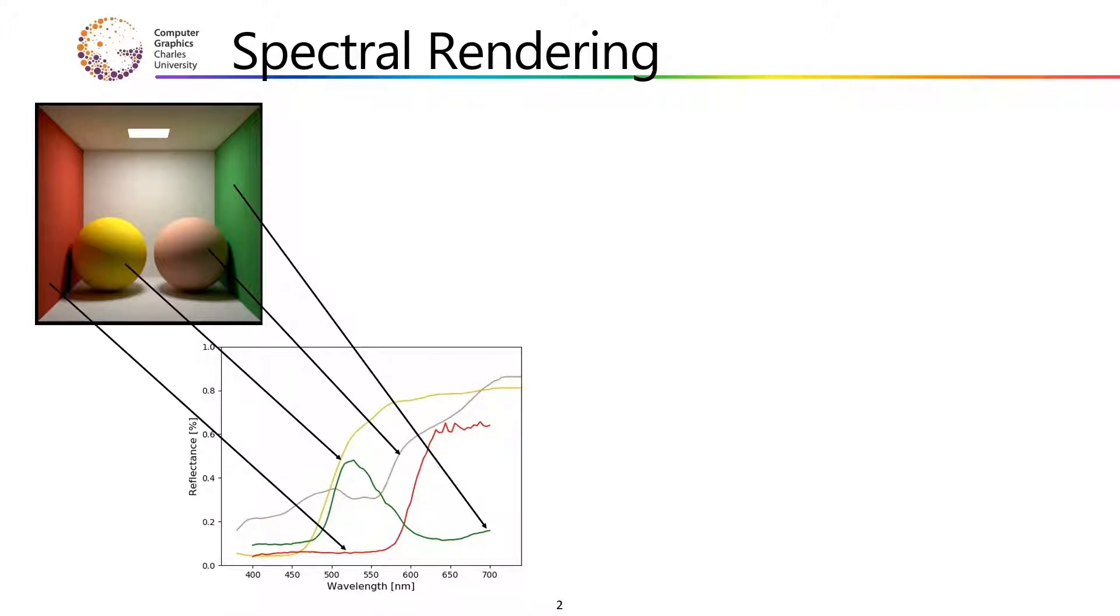By doing so, we are capable of simulating various natural phenomena such as metamerism or fluorescence, and the resulting renders are more realistic. Also, spectral rendering has the additional benefit to predict object appearance under varying illuminating conditions.